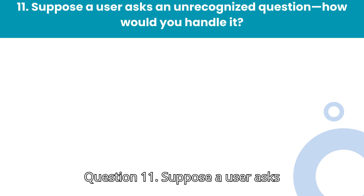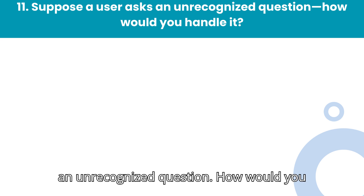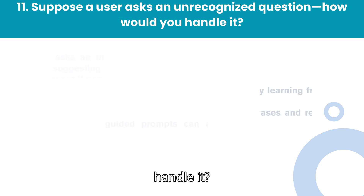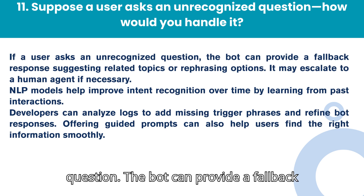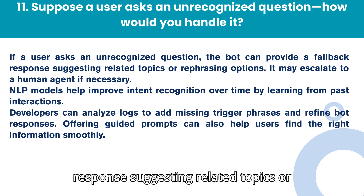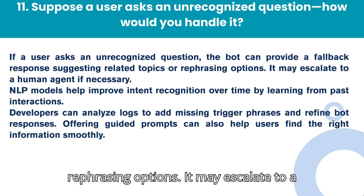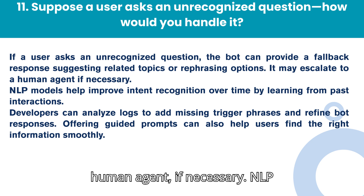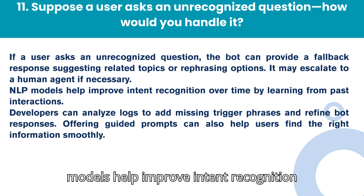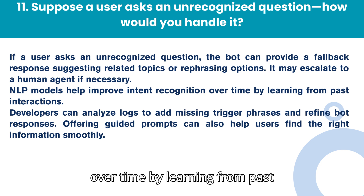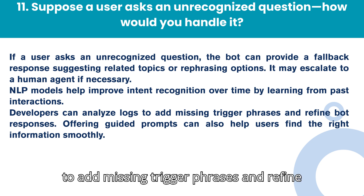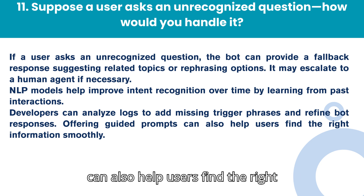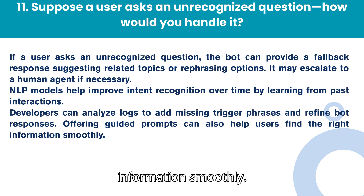Question 11: Suppose a user asks an unrecognized question — how would you handle it? If a user asks an unrecognized question, the bot can provide a fallback response suggesting related topics or rephrasing options. It may escalate to a human agent if necessary. NLP models help improve intent recognition over time by learning from past interactions. Developers can analyze logs to add missing trigger phrases and refine bot responses. Offering guided prompts can also help users find the right information smoothly.